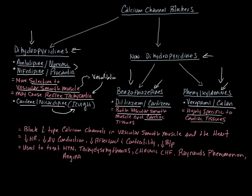Phenylalkylamines are highly selective to cardiac tissues—not vascular smooth muscle. The one to know is verapamil, also known as Calan. So to summarize: dihydropyridines are selective to blood vessels; benzothiazepines affect both vessels and heart; phenylalkylamines are cardiac-specific. Diltiazem, verapamil, amlodipine, and nifedipine are all home meds, though amlodipine and nifedipine are almost exclusively oral.